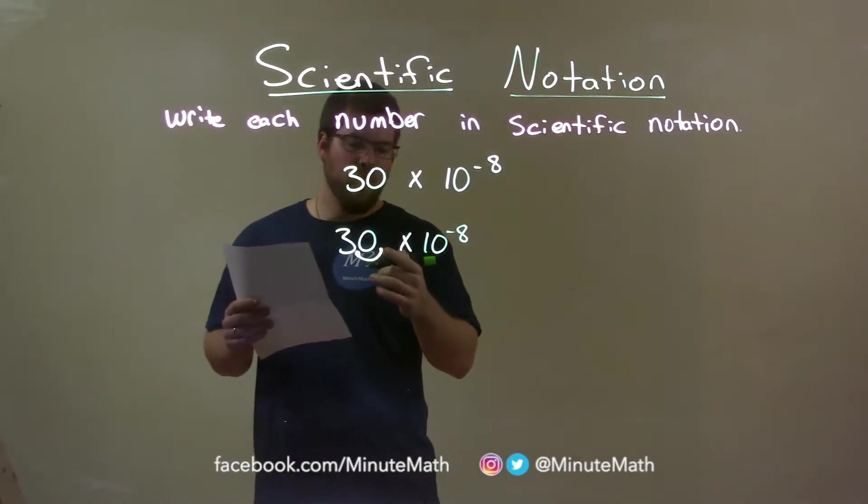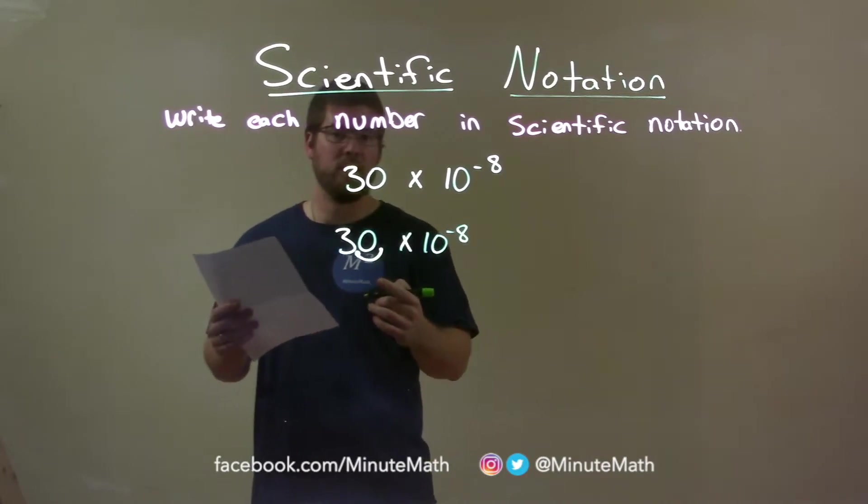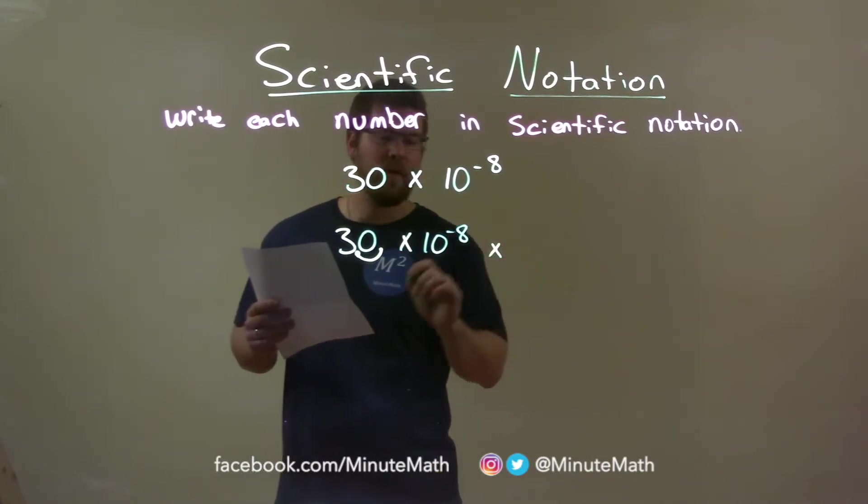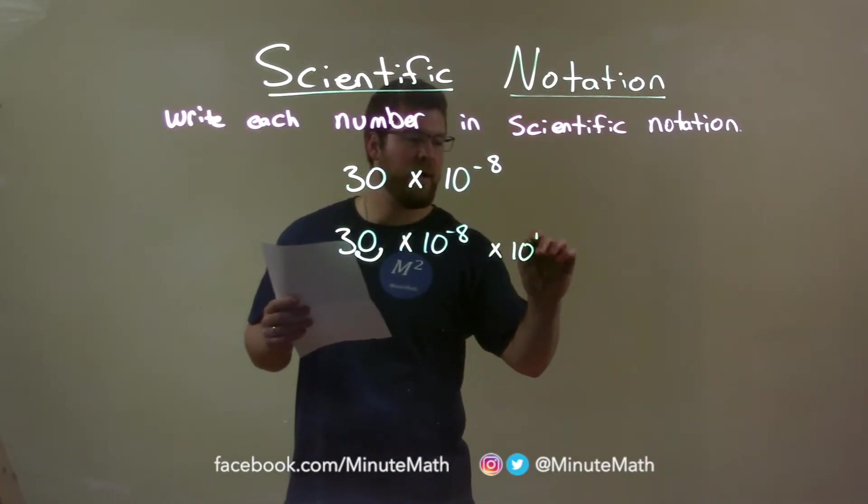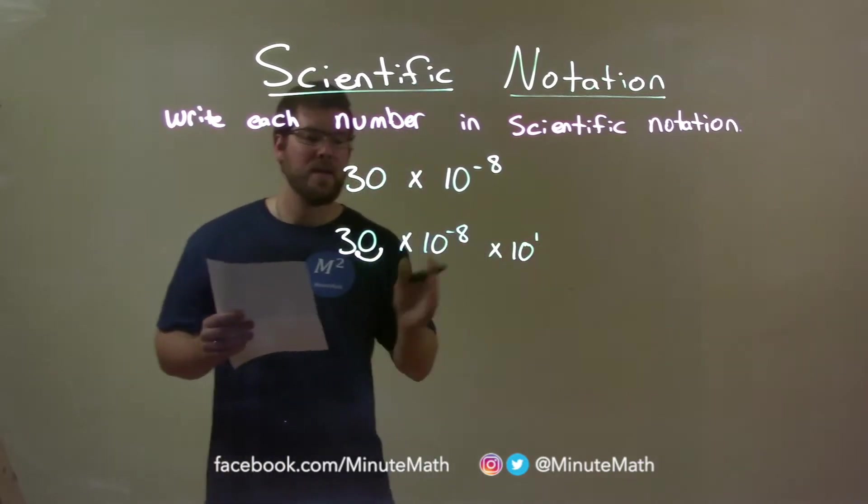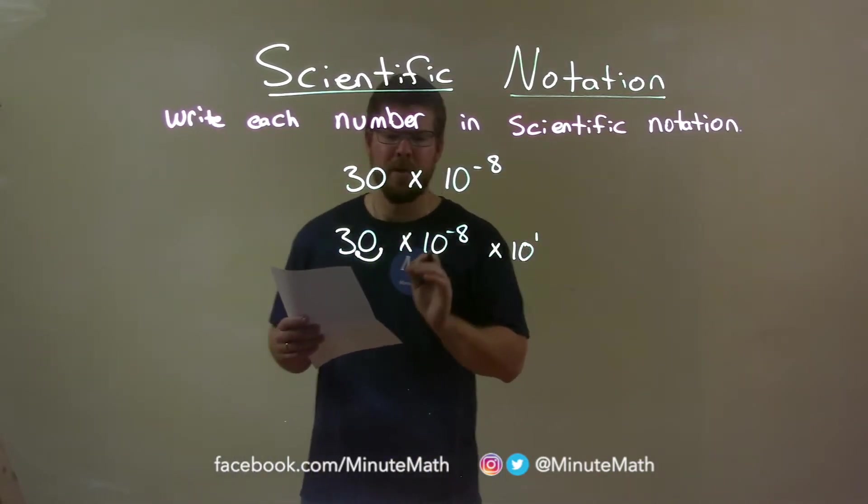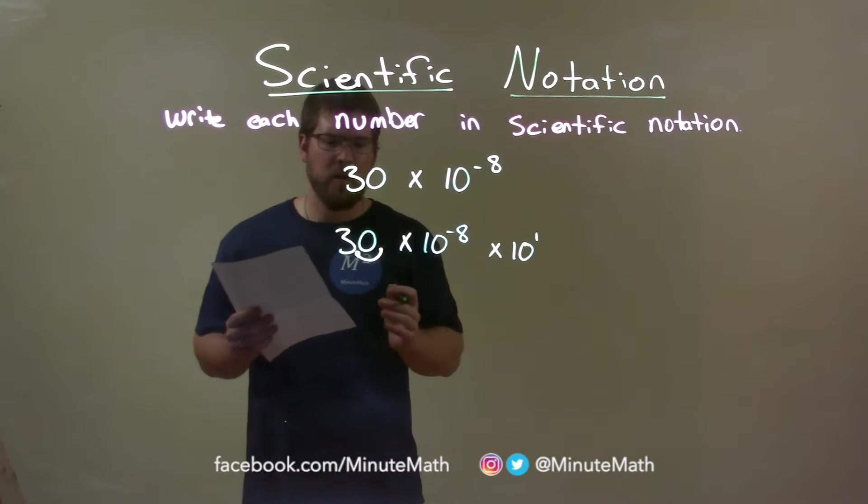But, since I moved the decimal over to the left one spot, I have to then multiply this whole thing by 10 to the positive 1 power to counteract that, okay? So, now, let's write our final answer.